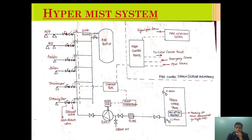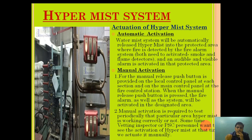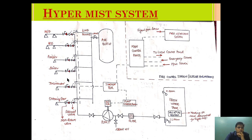Once the signal comes to the main control panel, it processes the signal and sends it to the junction box, opening the solenoid valve for the affected area and also starting the pump automatically. So the signal from the sensors does two things: it activates the solenoid valve and starts the pump. For manual release, a push button is provided at the local control panel at each section, and also at the main control panel at the fire control station. When the manual push button is pressed, the fire alarm and system are activated in the designated area.